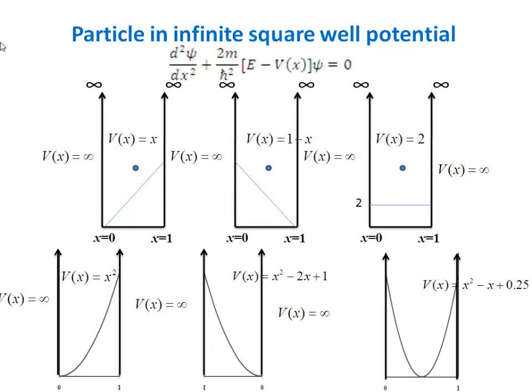For this I am using 6 different potential energy conditions for a particle inside the well. In the first figure, the potential energy is V(x) = x, meaning the bottom right edge of the well is sliced off.